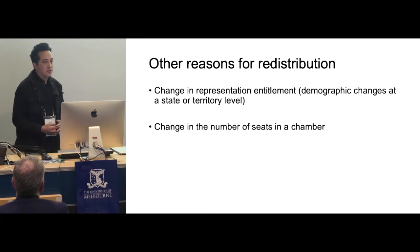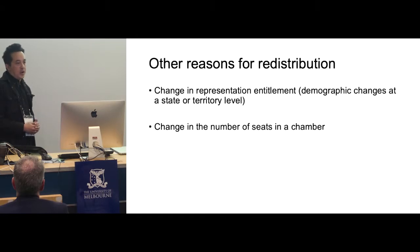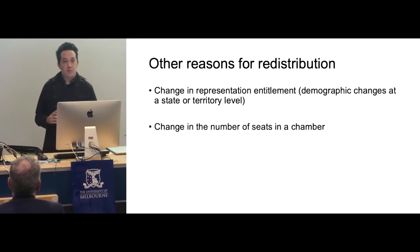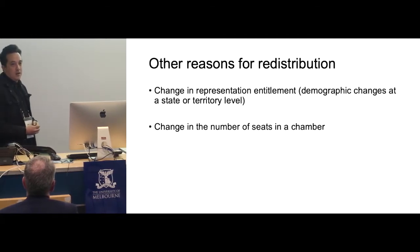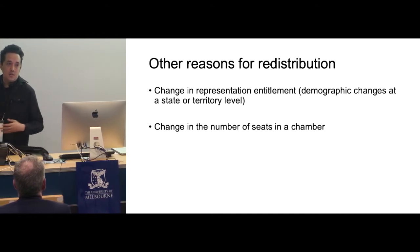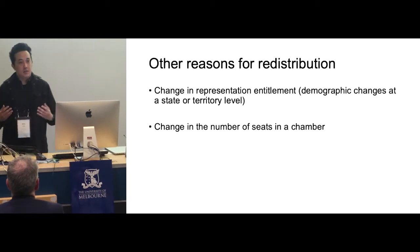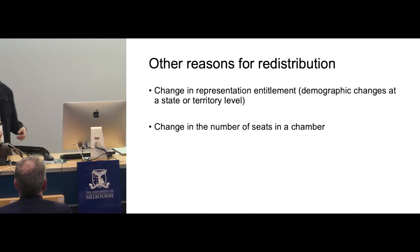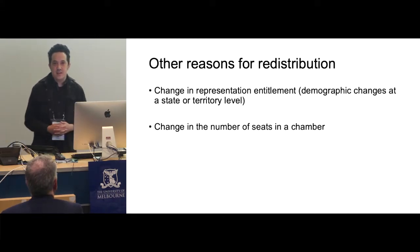There are some other reasons for redistributions. The electoral commission uses ABS data of the whole population to work out representation entitlements, and that can change the number of seats. For example, the House of Representatives will have 151 seats at the next election — it's had 150 for quite a long time. It also takes into account demographic changes and population shifts in states. The outcome is that the population of South Australia has remained quite static whereas Victoria and the ACT has risen, so Victoria and the ACT get an extra seat and South Australia loses one. There could also be legislative changes to the number of seats in a chamber, which require all the boundaries to be redrawn.